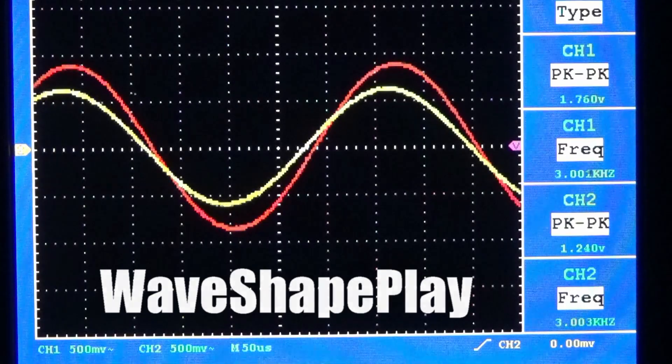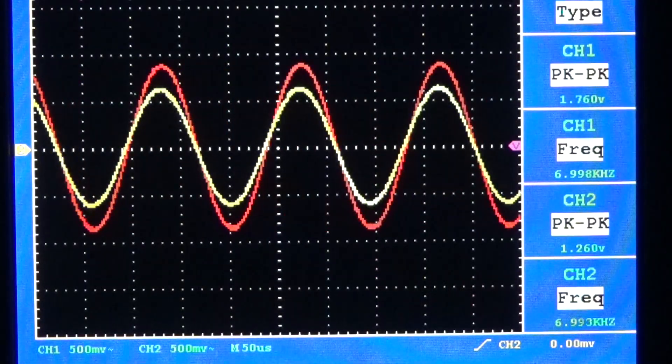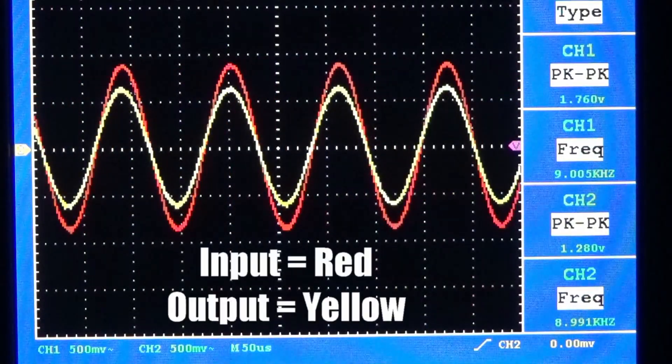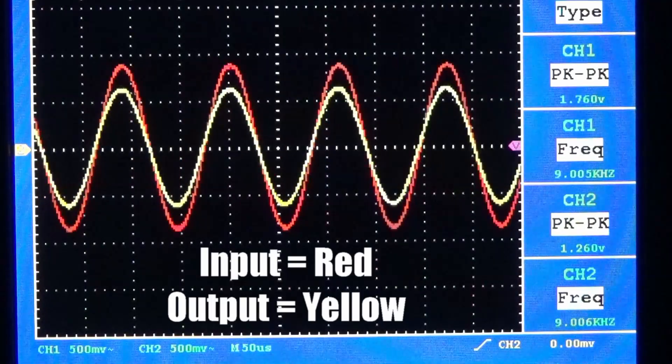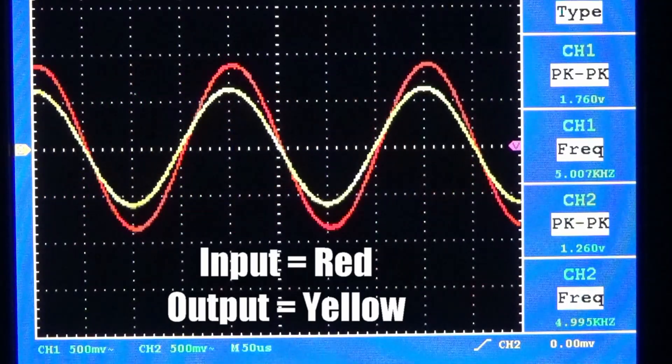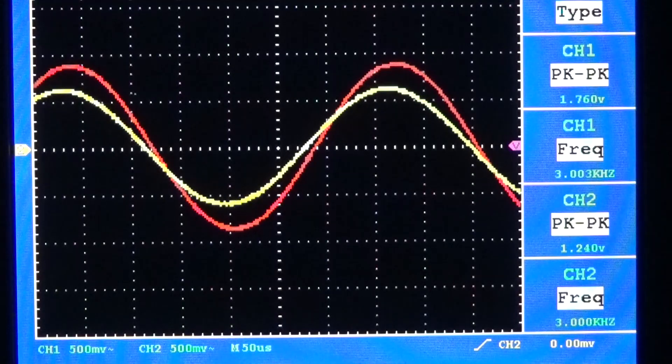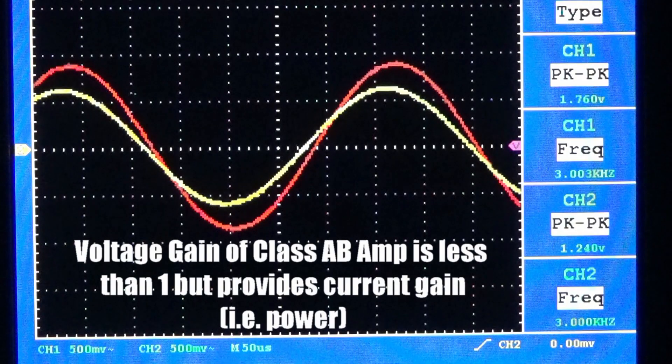Here is a look at the signal going into the output stage of an amplifier and the output itself which is driving a 4 ohm load. We see that the signals are nice and linear and are replicas of each other. The gain of the final output stage is a little less than 1. That's why the amplitudes aren't exactly equal.